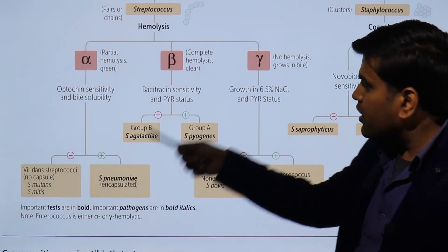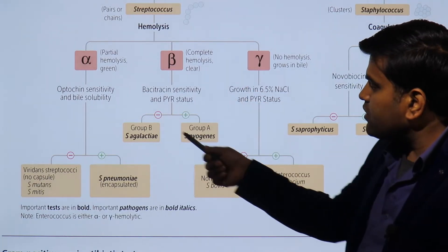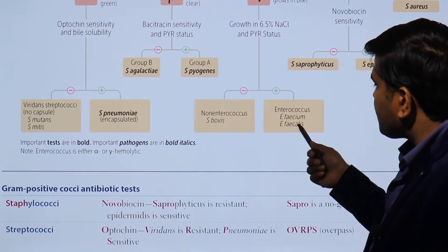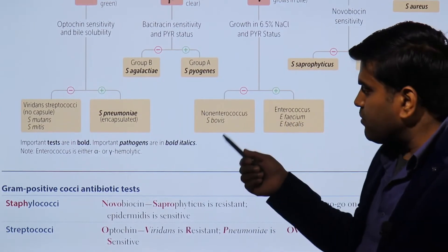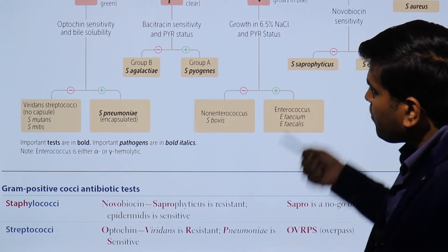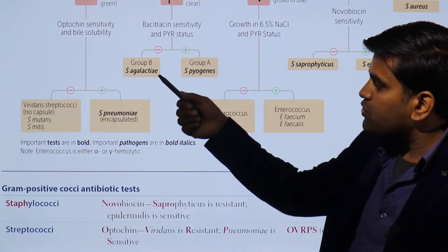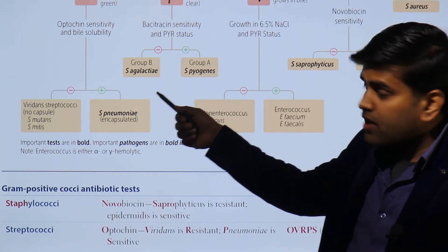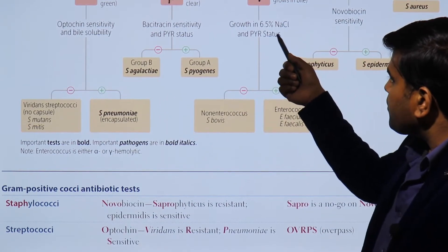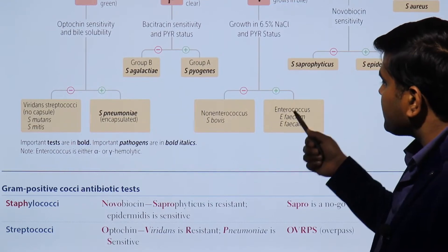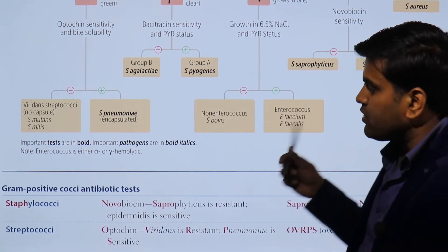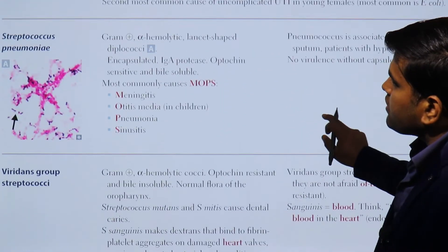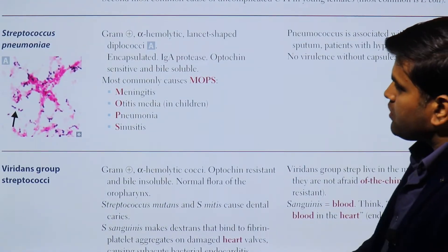In the streptococcus group, we have seen the partial hemolysis group containing streptococcus pneumoniae and viridans streptococci. There is a complete hemolysis group containing streptococcus pyogenes and streptococcus agalactiae. There is also a no hemolysis group containing enterococcus faecium and streptococcus bovis. These groups are differentiated by optochin sensitivity, bile solubility, bacitracin test, and growth in 6.5% NaCl.